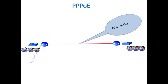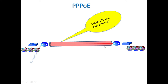Today we are going to discuss PPPoE, which stands for Point-to-Point Protocol over Ethernet. For explanation purposes, I have given two networks here — a first network and a second network — and these two networks are connected with the help of routers using an Ethernet link. An Ethernet link has been established between these two routers.